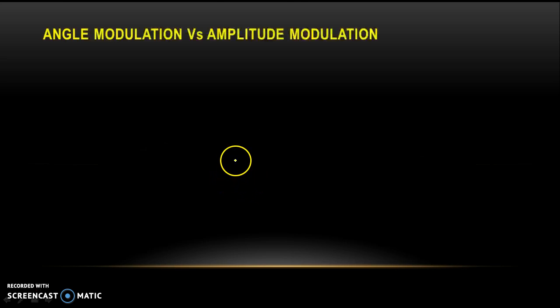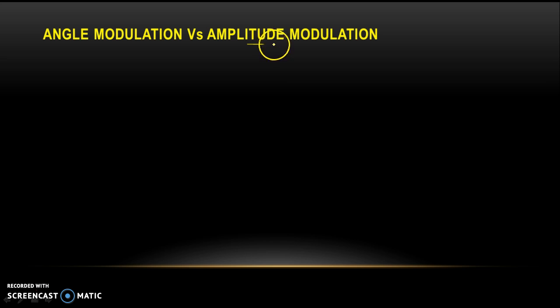The first thing we have to discuss is angle modulation versus amplitude modulation. My task here is to show a comparison, because if we have a proper comparison then we will be able to understand the derivations and the concept of angle modulation more properly. Modulation means shifting, and this shifting is used for transmitting message signals over a long distance using a carrier wave. That carrier wave can be modulated either by the amplitude or by the angle.